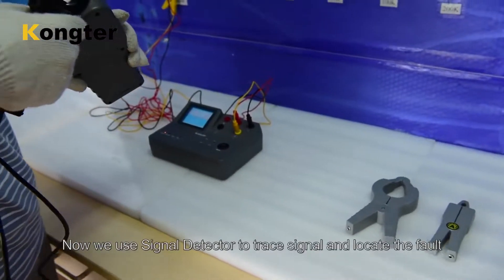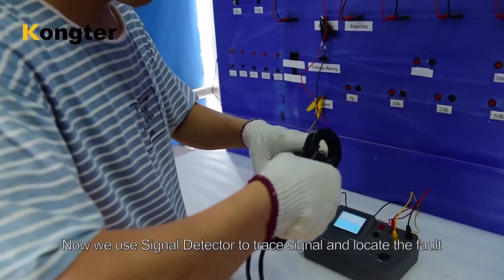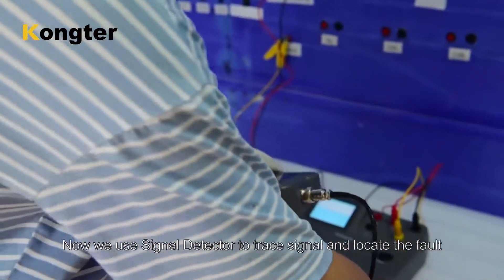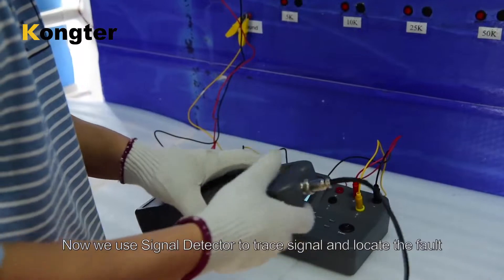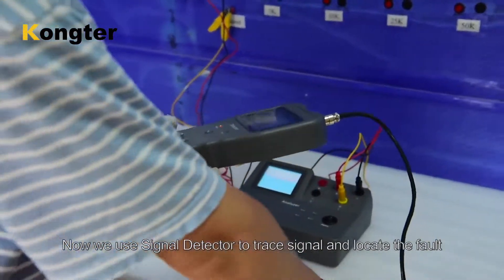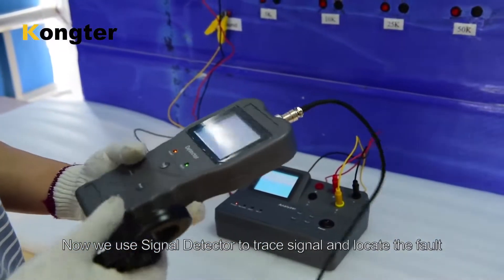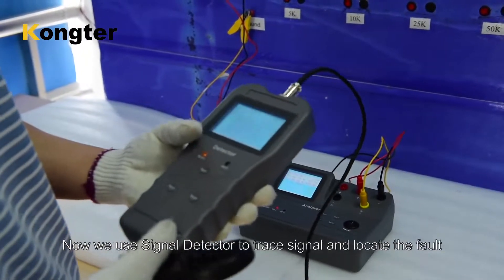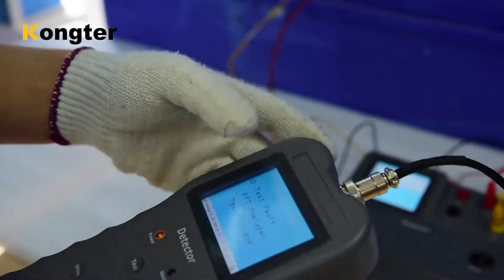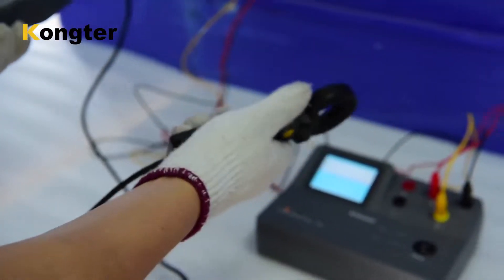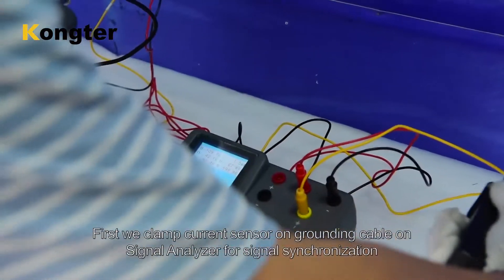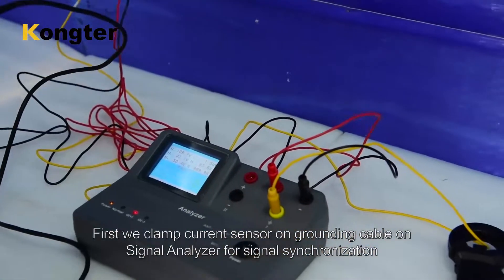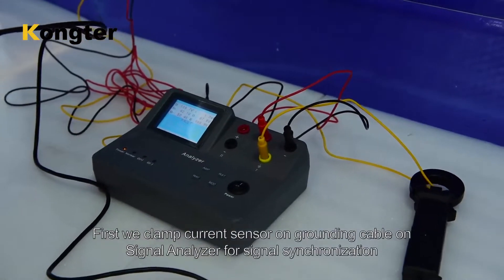Now we use signal detector to trace signal and locate the fault. First we clamp current sensor on grounding cable on signal analyzer for signal synchronization.